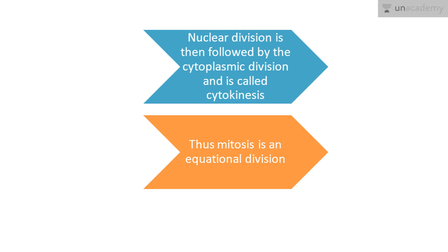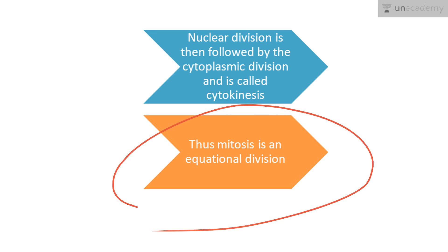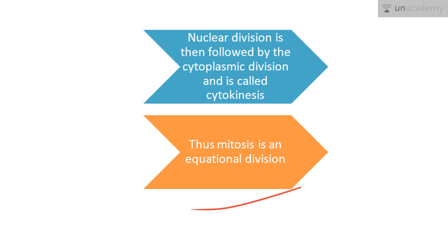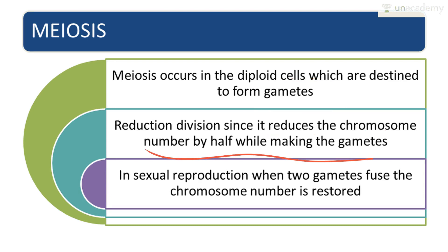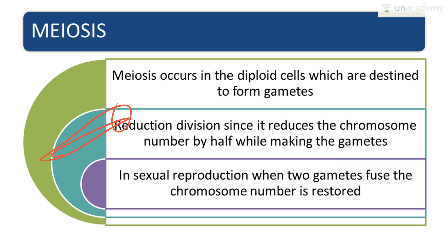Nuclear division is then followed by cytoplasmic division, called cytokinesis. Thus, mitosis is an equational division, meaning the chromosome number of the parent is conserved in the daughter cells. Next is meiosis. Meiosis occurs in diploid cells which are distinct from gametes. It is also called reduction division since it reduces the chromosome number by half while making gametes. In sexual reproduction, when two gametes fuse, the chromosome number is restored.